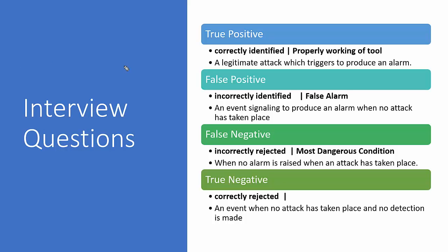First, true positive means there is a legitimate attack that triggers an alarm — it is correctly identified. For example, if there is a virus that penetrates a system and the antivirus successfully detects it based on its signature, that is a true positive. It shows the tool is working in proper condition — whatever virus was present was discovered by the antivirus.